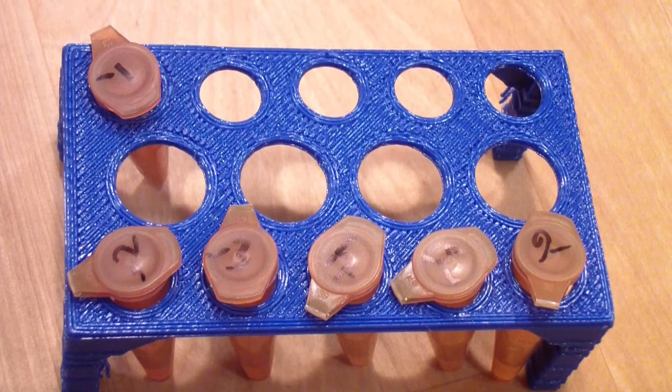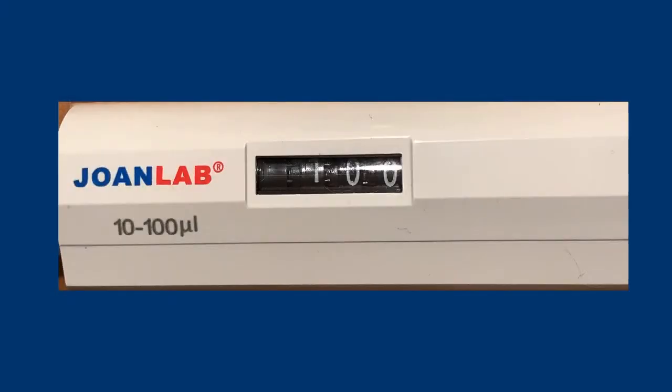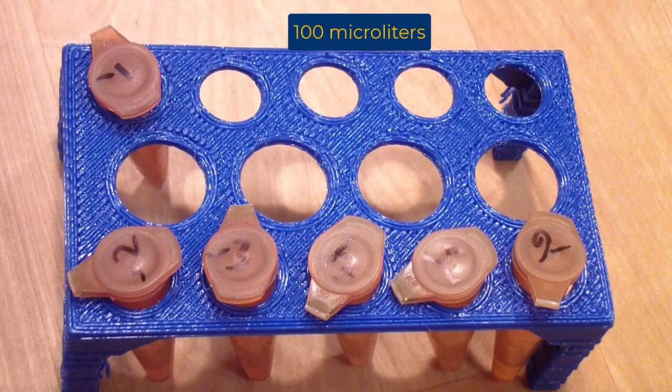Label the Eppendorf tubes with the same dilutions. Set your pipetter to 100 microliters. Pipet 100 microliters of TSB into the first Eppendorf tube.